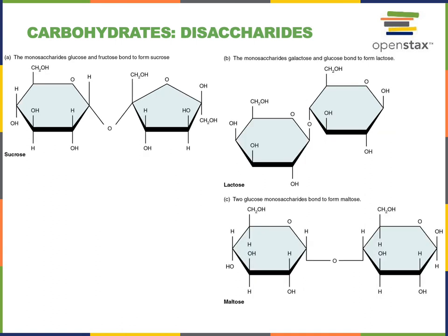A disaccharide is a dimer of two monosaccharides that have been joined together by dehydration synthesis. In the top left here we see sucrose, which is a disaccharide formed from one glucose and one fructose monomer joined together in dehydration synthesis. In the top right we see lactose, which is milk sugar, a disaccharide formed from one glucose monomer and one galactose monomer. In the bottom right we see maltose, a disaccharide formed from two glucose monomers.